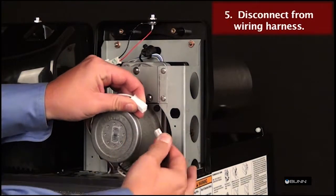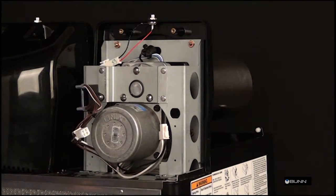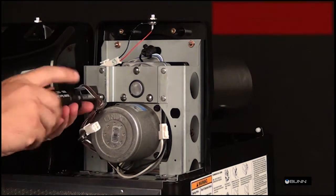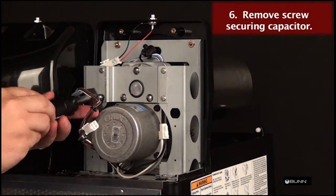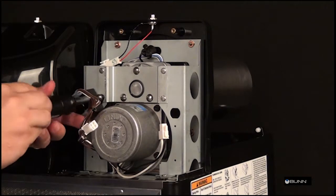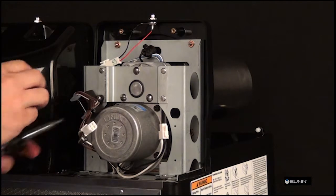Disconnect the auger motor connector from the main wiring harness. Remove the locking screw on the auger motor mounting bracket securing the run capacitor. Set capacitor aside.